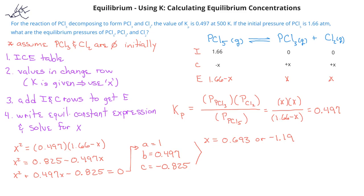We know that negative 1.19 cannot be the value of X because that would give us a negative value for the equilibrium pressure of PCl3 and Cl2. Since X is now 0.693, we can plug those values into what we know for the equilibrium pressures and then calculate their values. For PCl3 and Cl2, their pressures will simply be 0.693 atmospheres. For PCl5, its equilibrium pressure will be 1.66 minus 0.693 or 0.967 atmospheres.